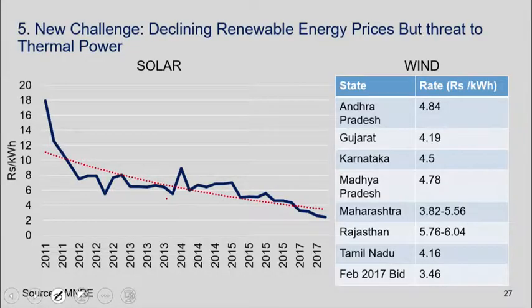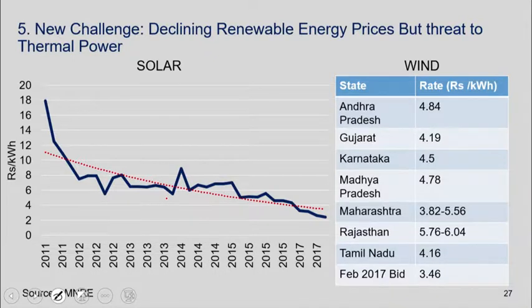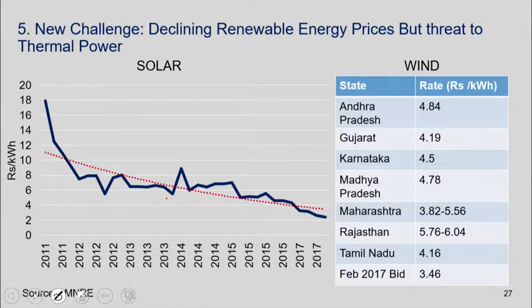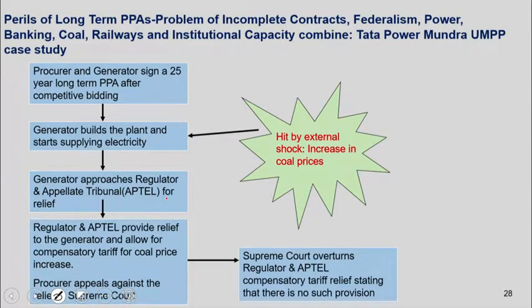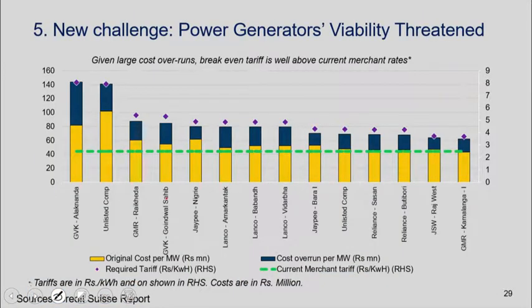One of the really new challenges arising in India — and probably all over the world — is what's happening because of technological change and government subsidization. The price of renewables in 2011 was 18 rupees per kilowatt-hour; today it's just over 2 rupees, and some bids are even lower. These are the rates for wind power. On the one hand this is terrific news for consumers and for the environment. But as we know, in the real world there are no free lunches — there are some big challenges associated with this.